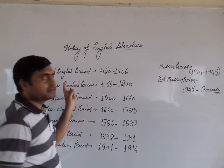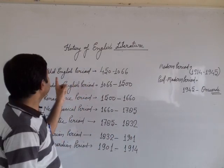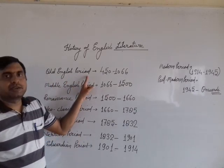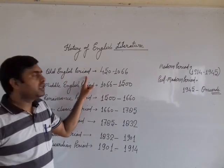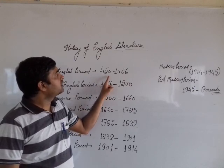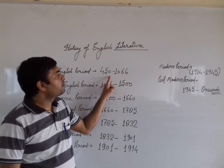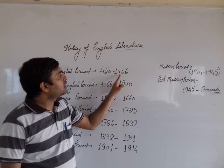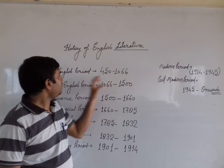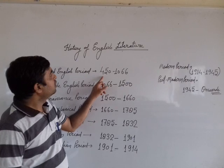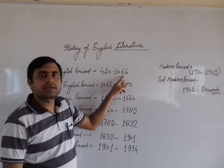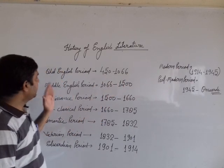The first period, as you can see here, is the Old English Period. The Old English Period started from 450 to 1066.